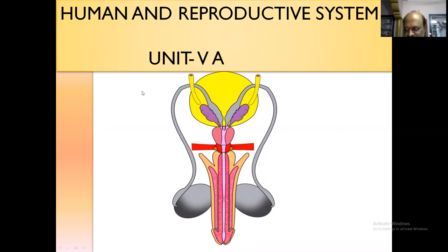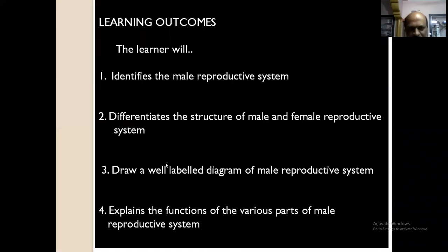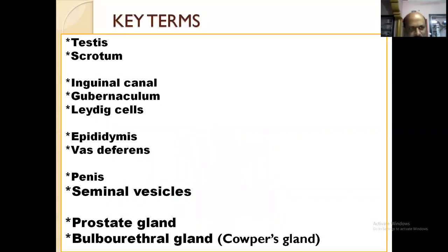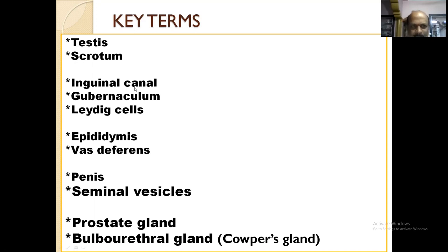First is testis — otherwise called testicles, the primary male sex organs. The key terms involved in this chapter are: testis, scrotum, inguinal canal, gubernaculum, Leydig cells, epididymis, vas deferens, penis, seminal vesicles, prostate gland, and bulbourethral glands or Cowper's gland. We should discuss each one in detail.